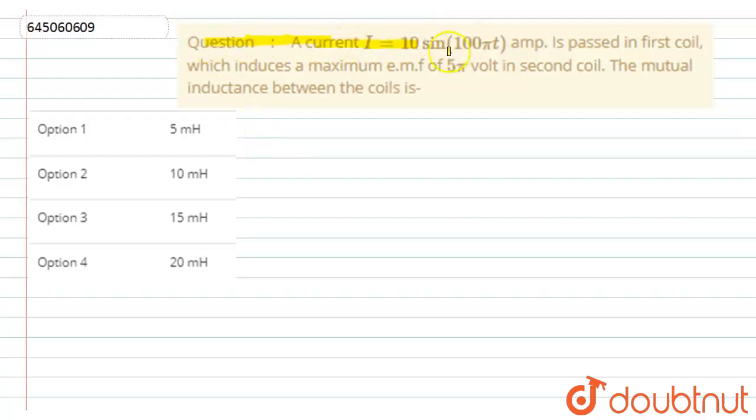Hello students, so the question is: a current I = 10 sin(100πt) amperes is passed in first coil, which induces a maximum EMF of 5π volts in second coil. Then the mutual inductance between the coils is?